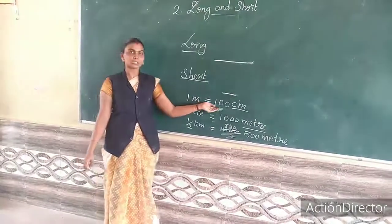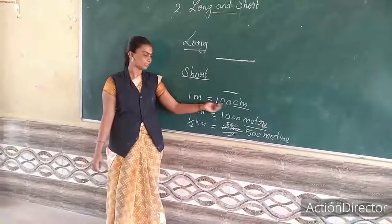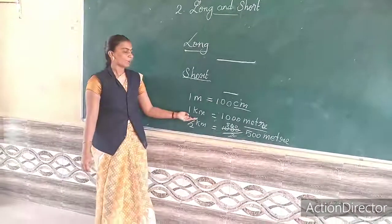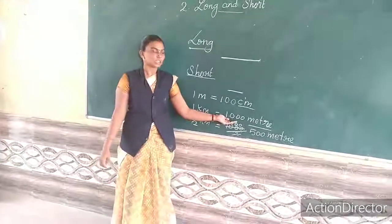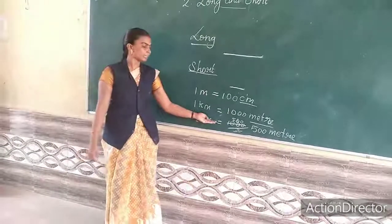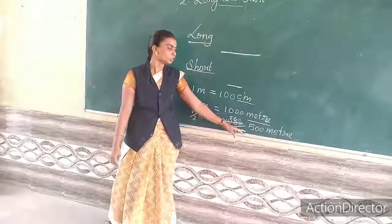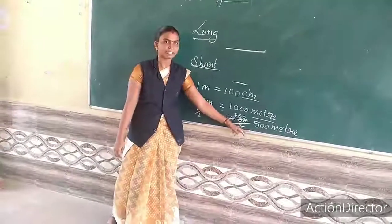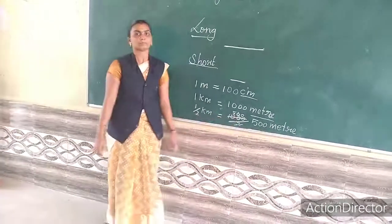One meter is equal to hundred centimeters. One kilometer is equal to thousand meters. Half kilometer is equal to five hundred meters.